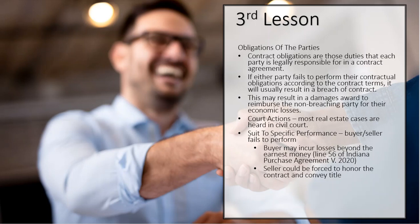You go in front of the judge, the judge hears both sides, and then makes a decision. One of the things the judge can render is a suit for specific performance. A suit for specific performance is when the buyer or the seller failed to do what they're supposed to do — for example, the buyer didn't buy the house, or the seller says they can't clear the title and can't sell the house.